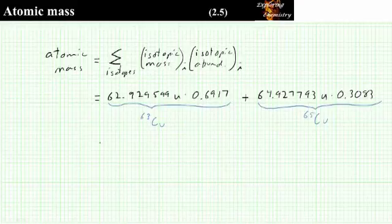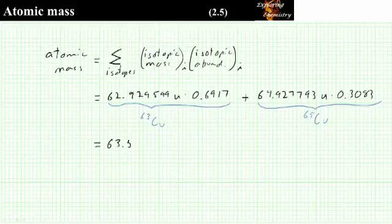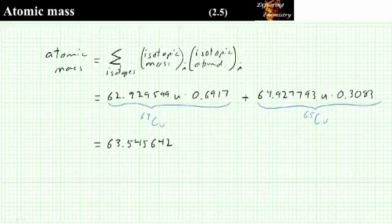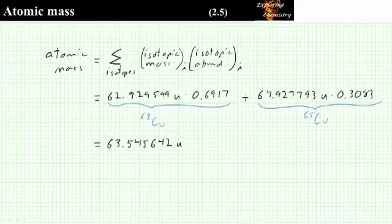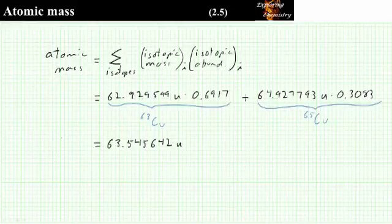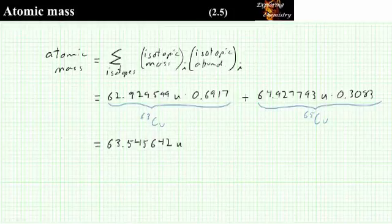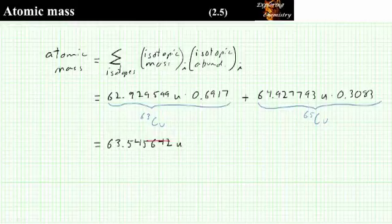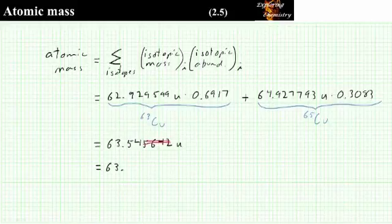So when we plug all of these values into a calculator, we get a value of 63.545642 atomic mass units. But we need to look at significant digits. The abundances are only reported to four significant digits, so this value is only valid to four significant digits. And so reported to four significant digits, we have 63.55 atomic mass units.